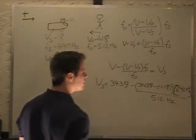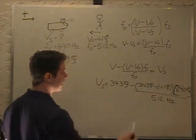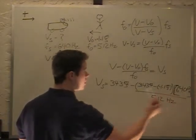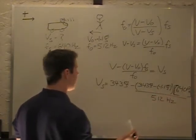This becomes a plus because it's minus minus, so we get 343 plus 1.1, which is 344.1 times 640, divided by 512.